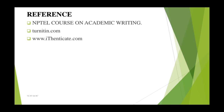I have collected information from the NPTEL course on academic writing — their videos are of great benefit, and people can enroll in this course to know more. I have also obtained information from turnitin.com. Turnitin.com is a tool used to detect plagiarism accurately. Whoever is writing a research article should use iThenticate as well as Turnitin to check the percentage of plagiarism before submission of any article or thesis.